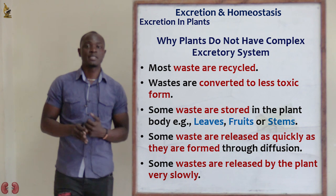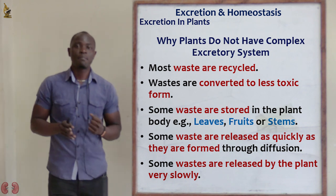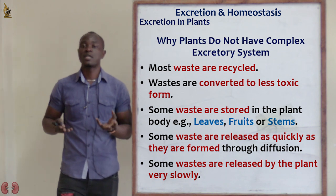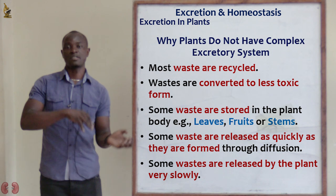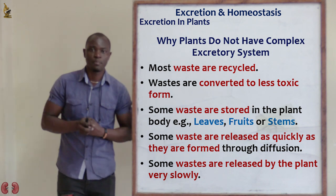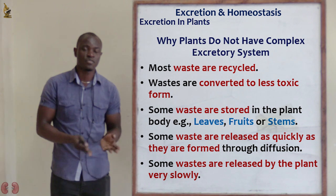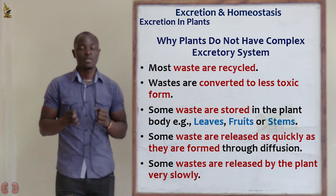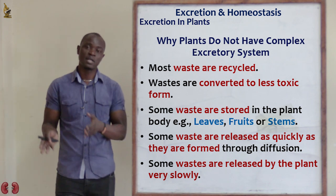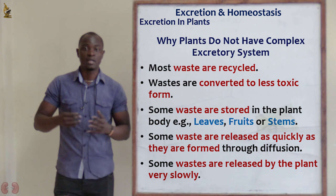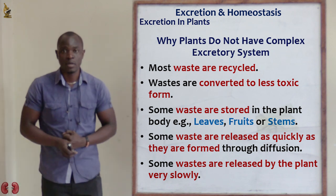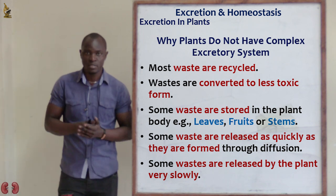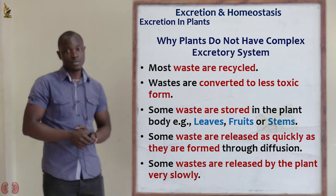The fourth reason is that some plants lose their waste products rapidly through diffusion. As soon as waste products are formed, they are released immediately to the environment through diffusion — from the leaves, stems, and roots. This rapid removal means plants don't require a complex excretory system.